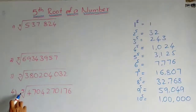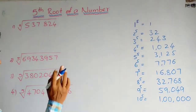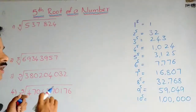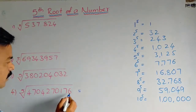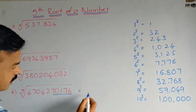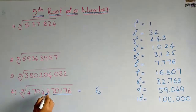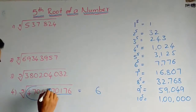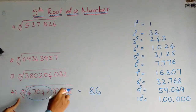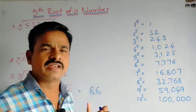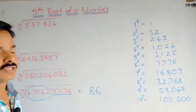Click on the bell symbol to get new video updates. Now, you see here one number — the fifth root of 2,470,427,017,6. It is a big number. How can you find the fifth root in five seconds? I can find it — the answer is 86 — just in five seconds.